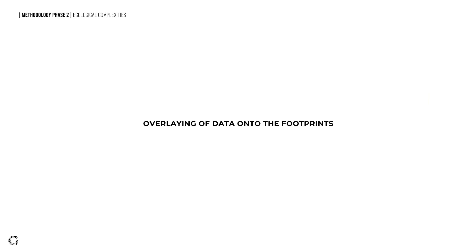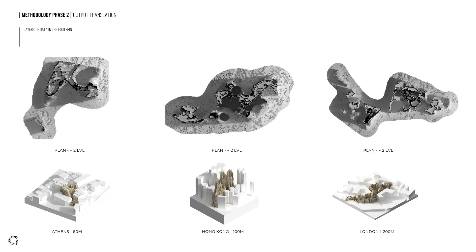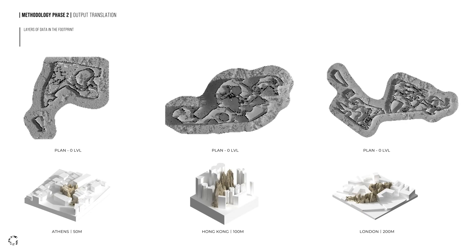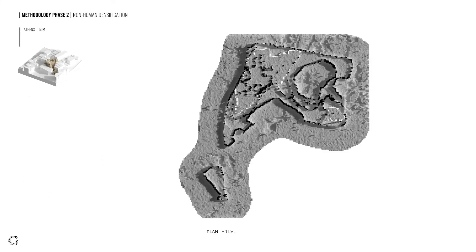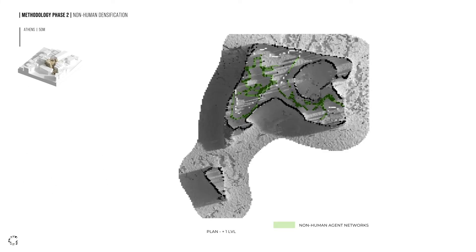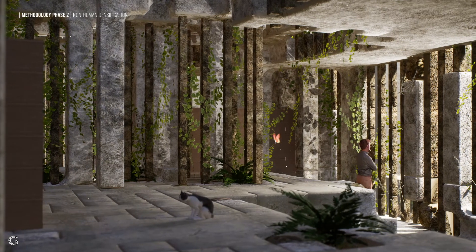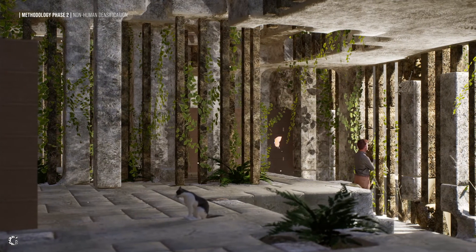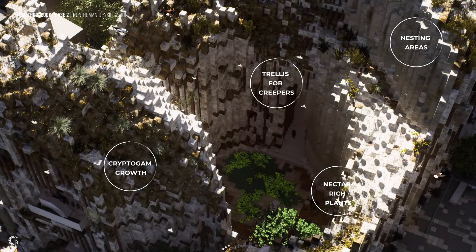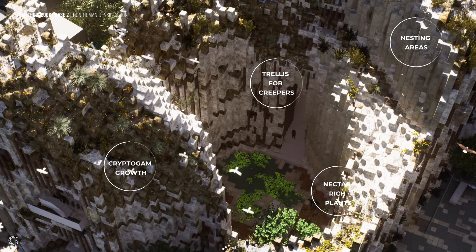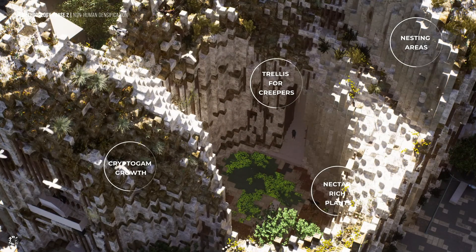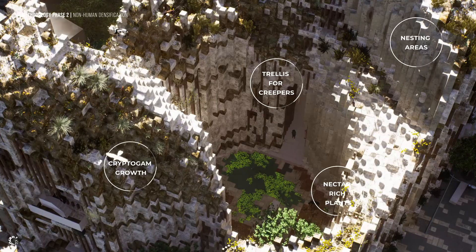In this step, we integrate all the data onto the footprint on different levels. The series of plans cut at different levels highlights the non-human agent network's densifications in its interior, dedicated to ecological production. Activities such as nesting, growing, and breeding take place in the non-human agent networks on northeast and southeast oriented slopes in the built space.